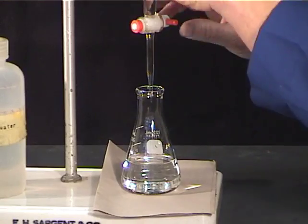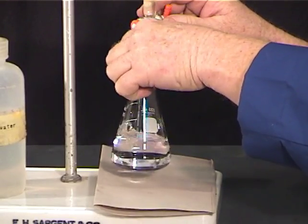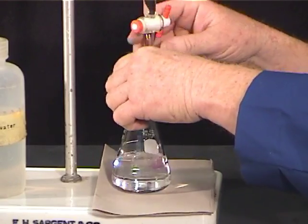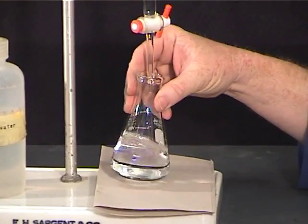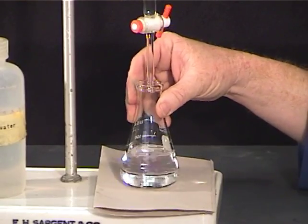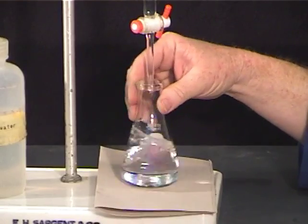Now you are ready to begin the titration. Initially, you may add the titrant rapidly while swirling the Erlenmeyer flask. The indicator will begin to change color in regions of high titrant concentration, but with swirling the color will disappear before the equivalence point is reached.